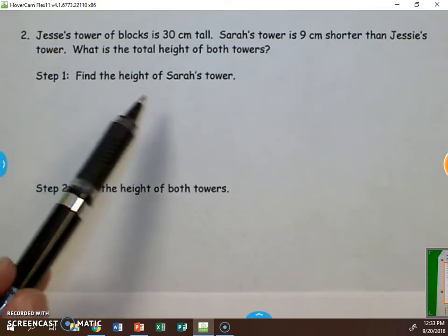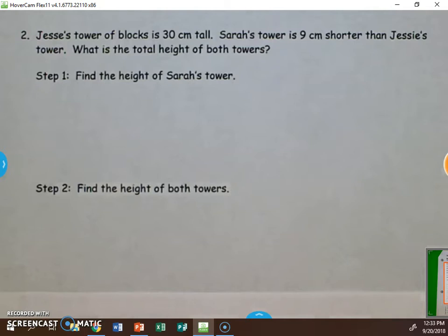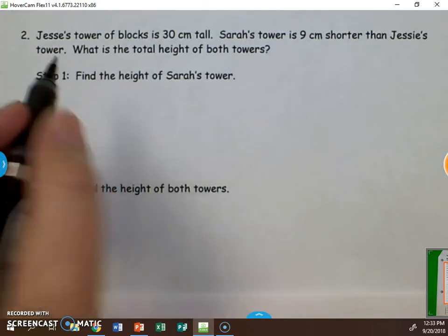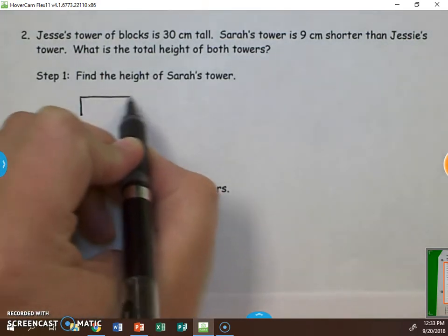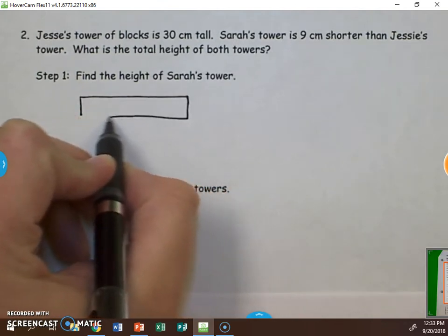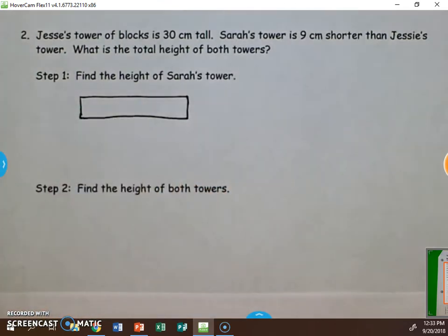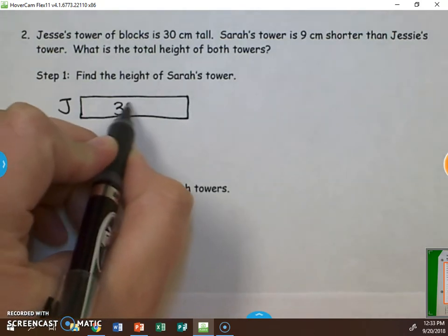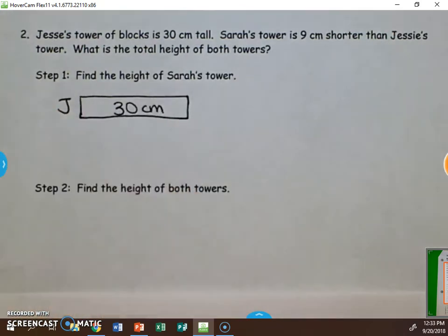Step one. We're going to find the height of Sarah's tower. So we're going to use the information that we know in the problem and draw a tape diagram to help us solve it. With a tape diagram, you draw rectangles, or in this case, what looks like a piece of tape. We then want to label it. This is Jesse's tower. It is 30 centimeters tall. So we are going to put 30 centimeters in the tower.